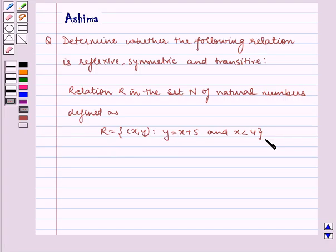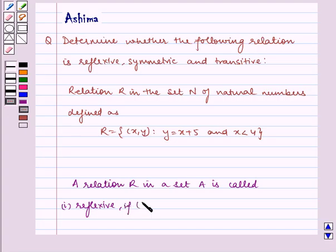Now before writing the solution, let us define the relation. A relation R in a set A is called reflexive if (a, a) belongs to R for every a belongs to A.